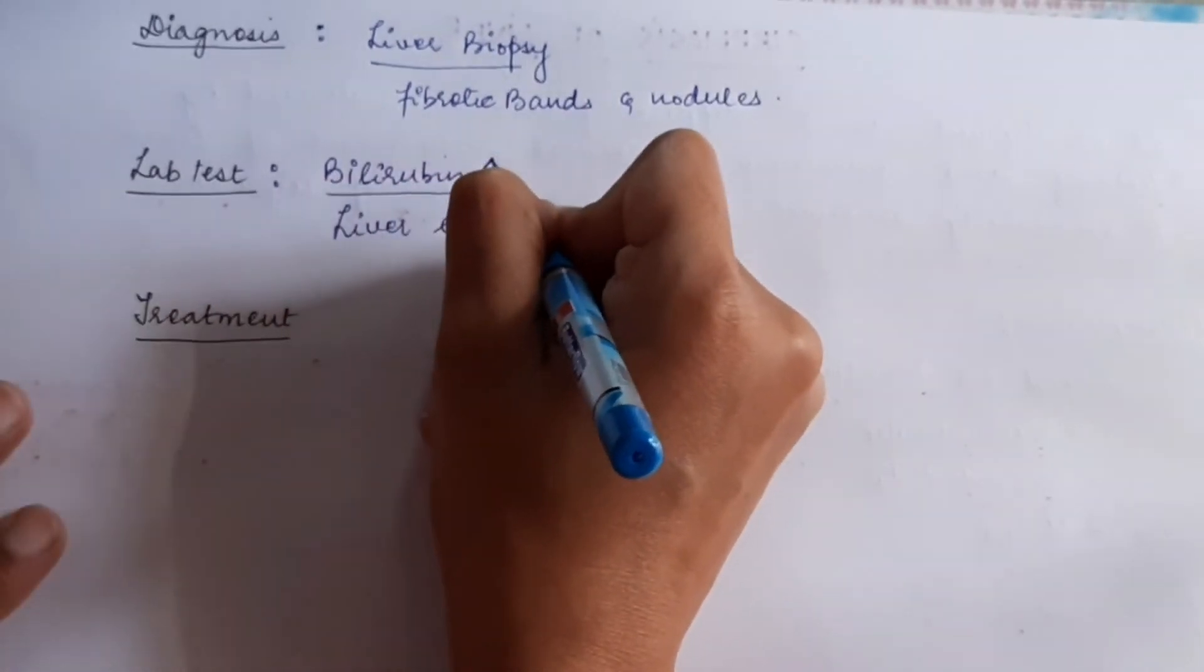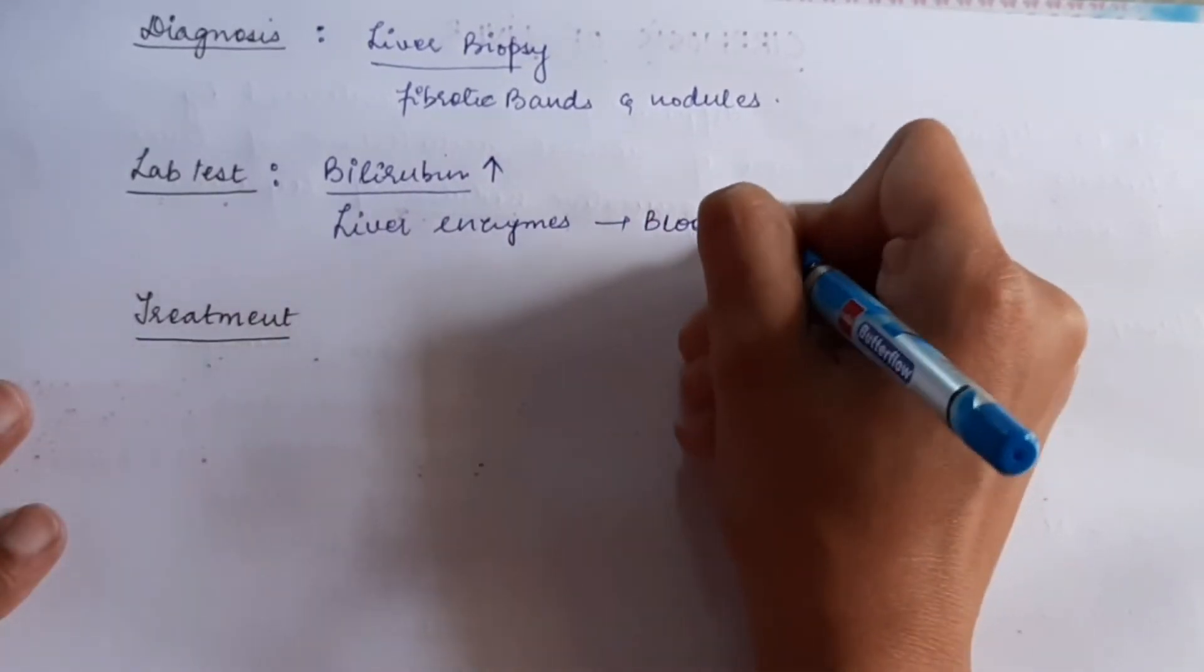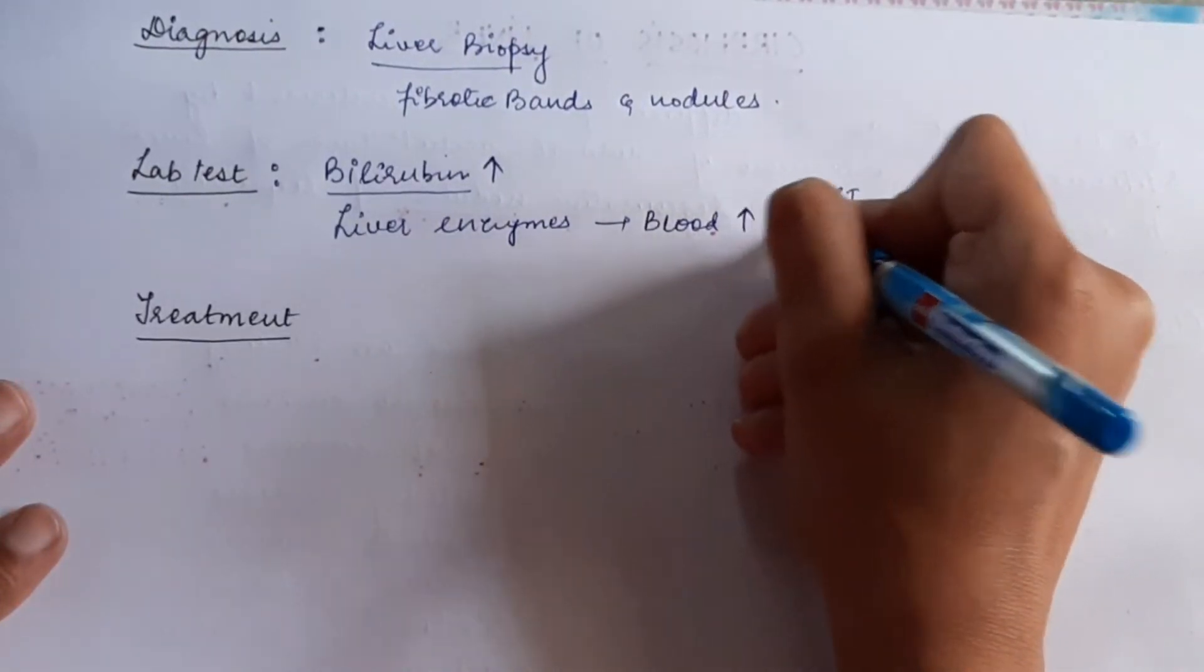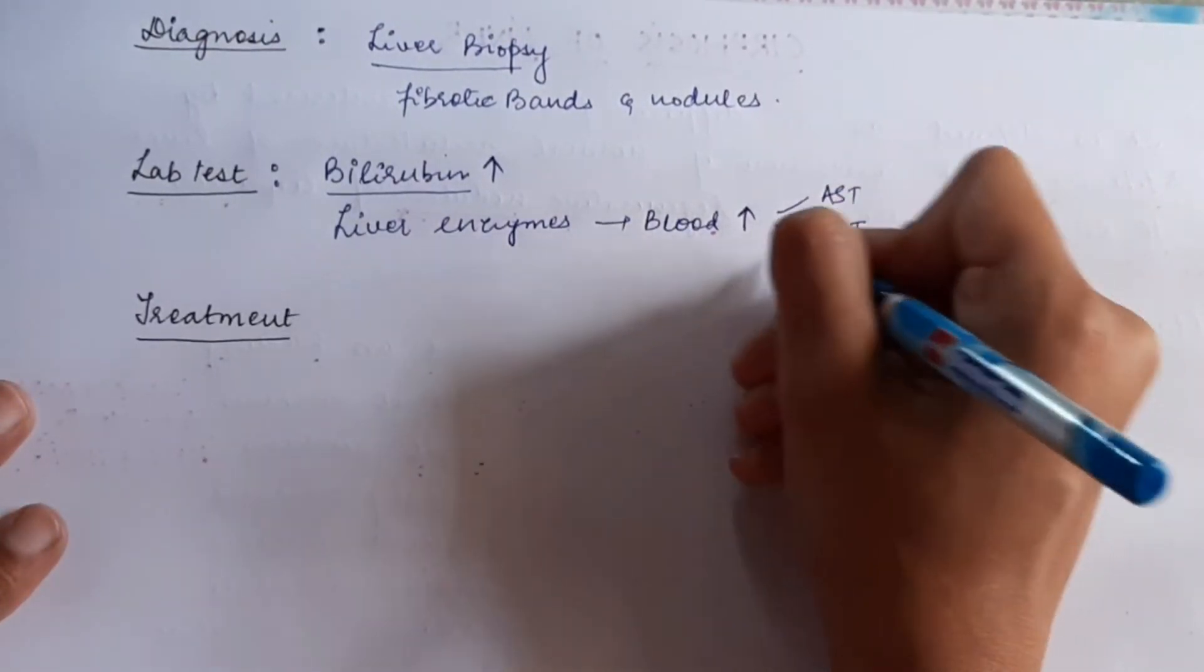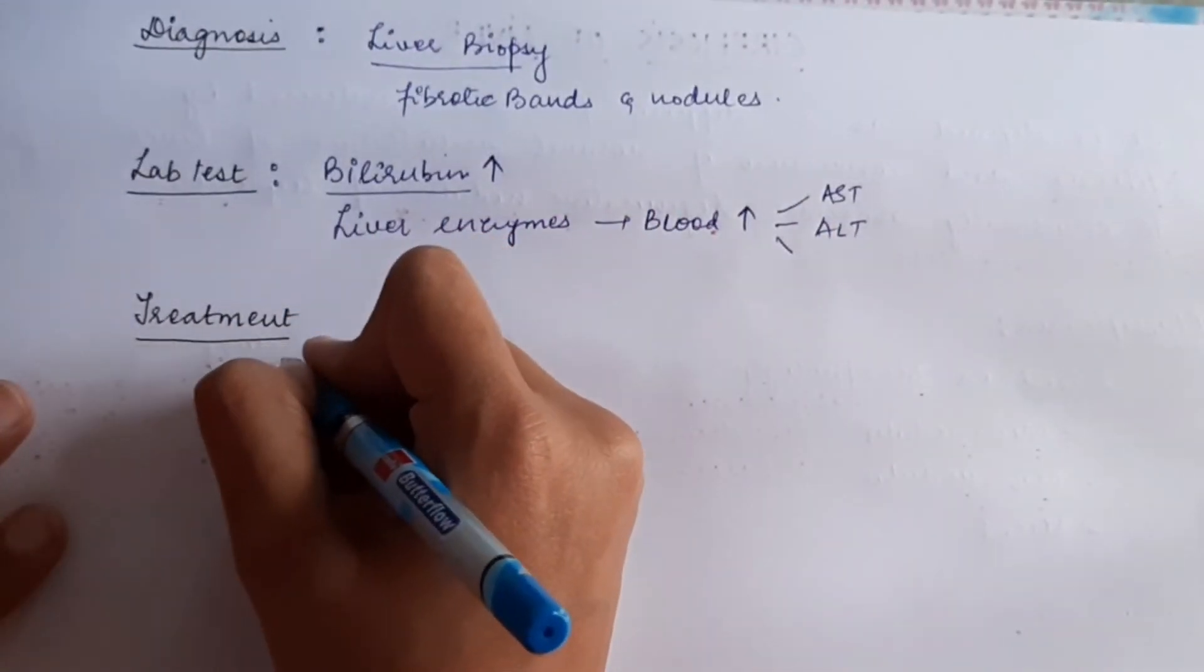As the hepatocytes are damaged, the liver enzymes will come into the blood and their concentration will be increased above normal, like AST, ALT, transaminase, and alkaline phosphatase.